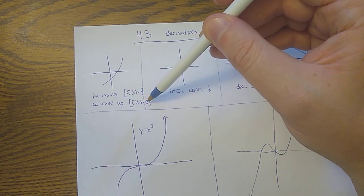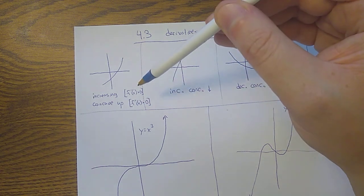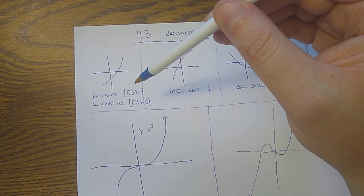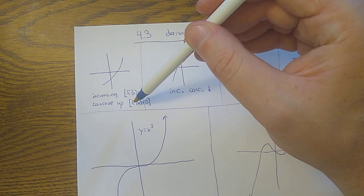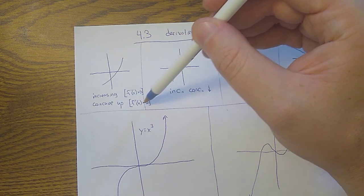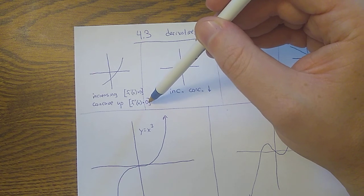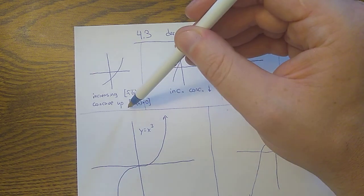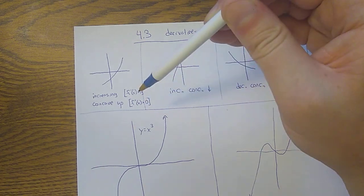The second derivative is positive — this is the derivative of the derivative. We know that if the derivative of something is positive, then it's increasing. So if the derivative of the derivative is positive, that means the derivative is increasing. So if the second derivative is positive, that means the first derivative is increasing.